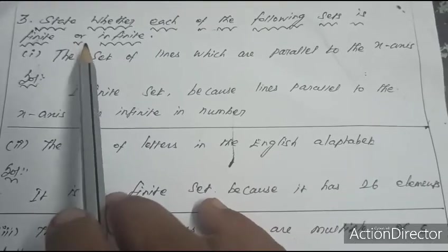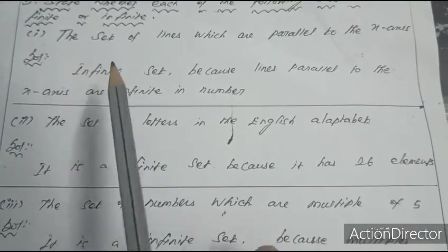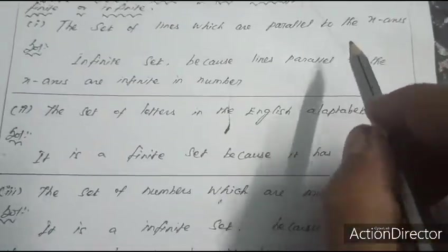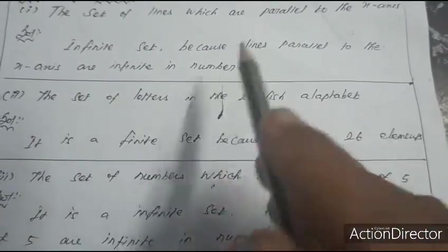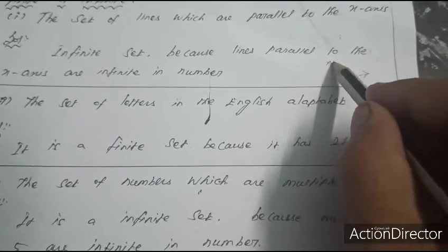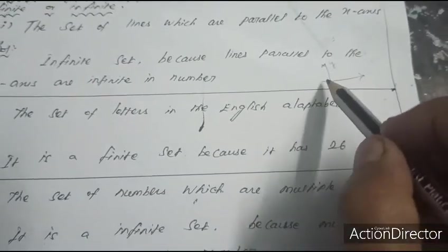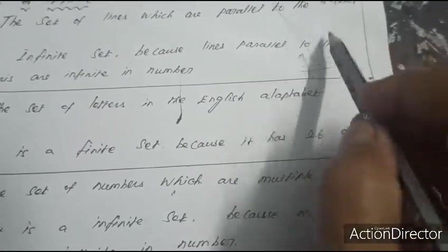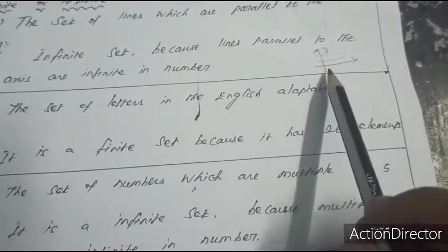Third question: state whether each of the following sets is finite or infinite. First: the set of lines which are parallel to the x-axis — it is an infinite set, because lines parallel to the x-axis are infinite in number. You can draw 1st, 2nd, 3rd, etc. lines parallel to the x-axis, so it is an infinite set.